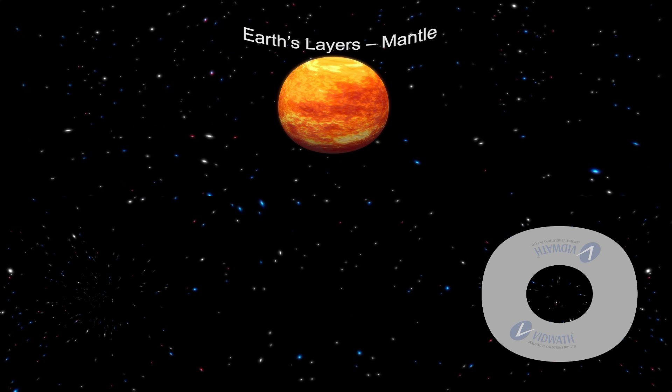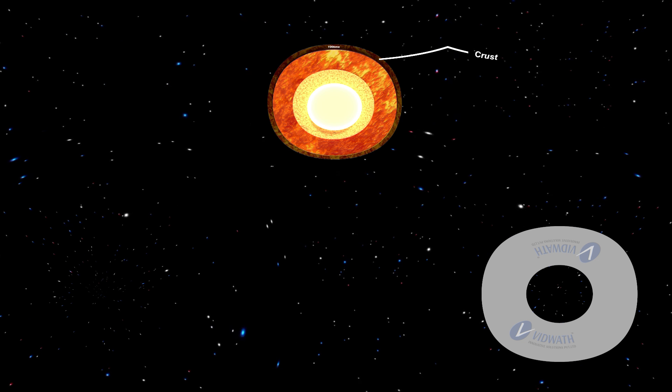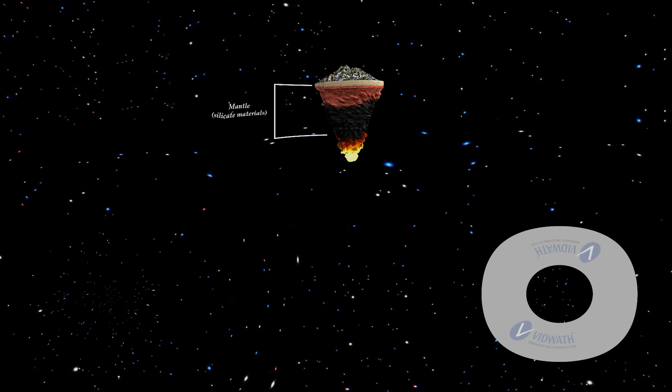Earth's layers, Mantle. The mantle extends from moho's discontinuity for 35 km to a depth of 2900 km, or moho discontinuity to the outer core. The crust and the uppermost part of the mantle is called lithosphere. Its thickness ranges from 10 to 200 km.